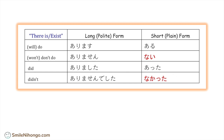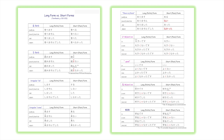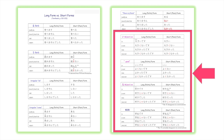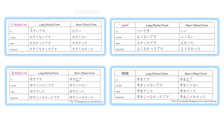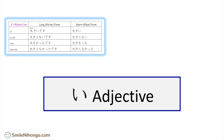We are going to cover this section of the handout today — how to conjugate short form or plain form for i-adjectives, na-adjectives, and nouns. Let's begin with i-adjectives. This one is easy as long as you remember the conjugation for i-adjectives in the long form.